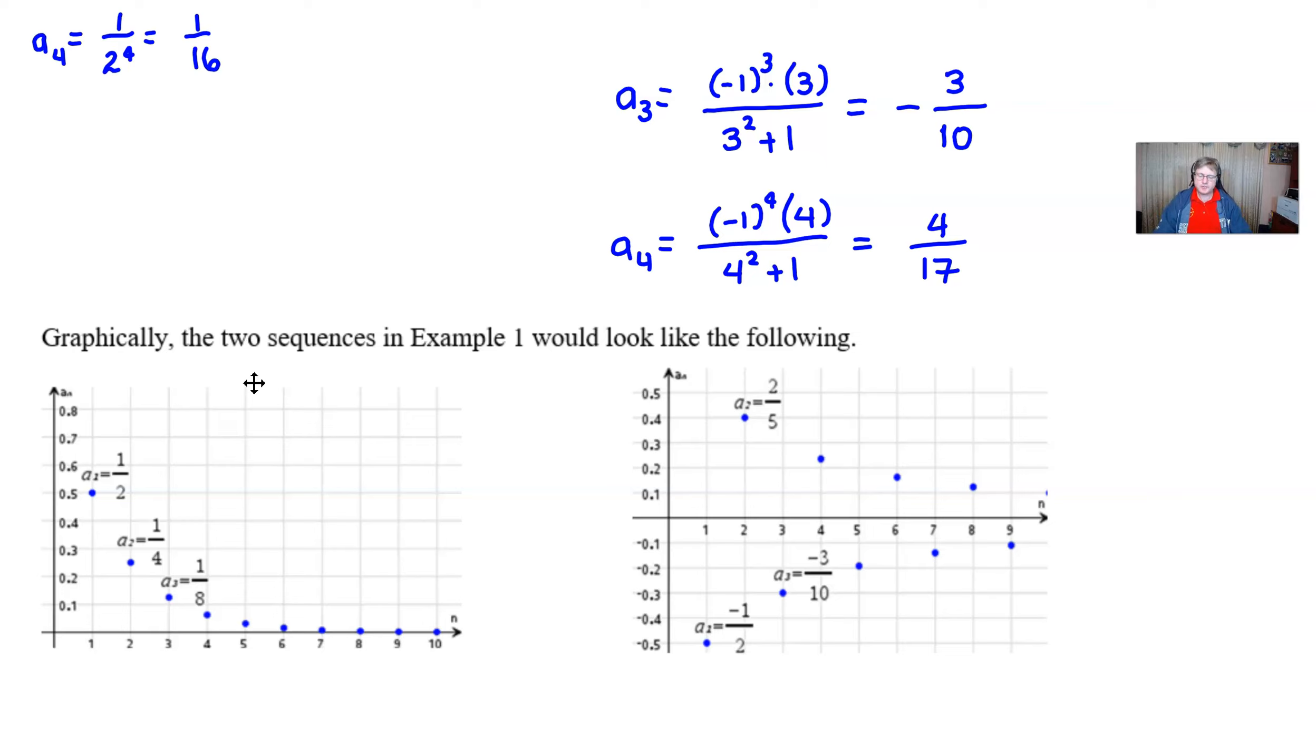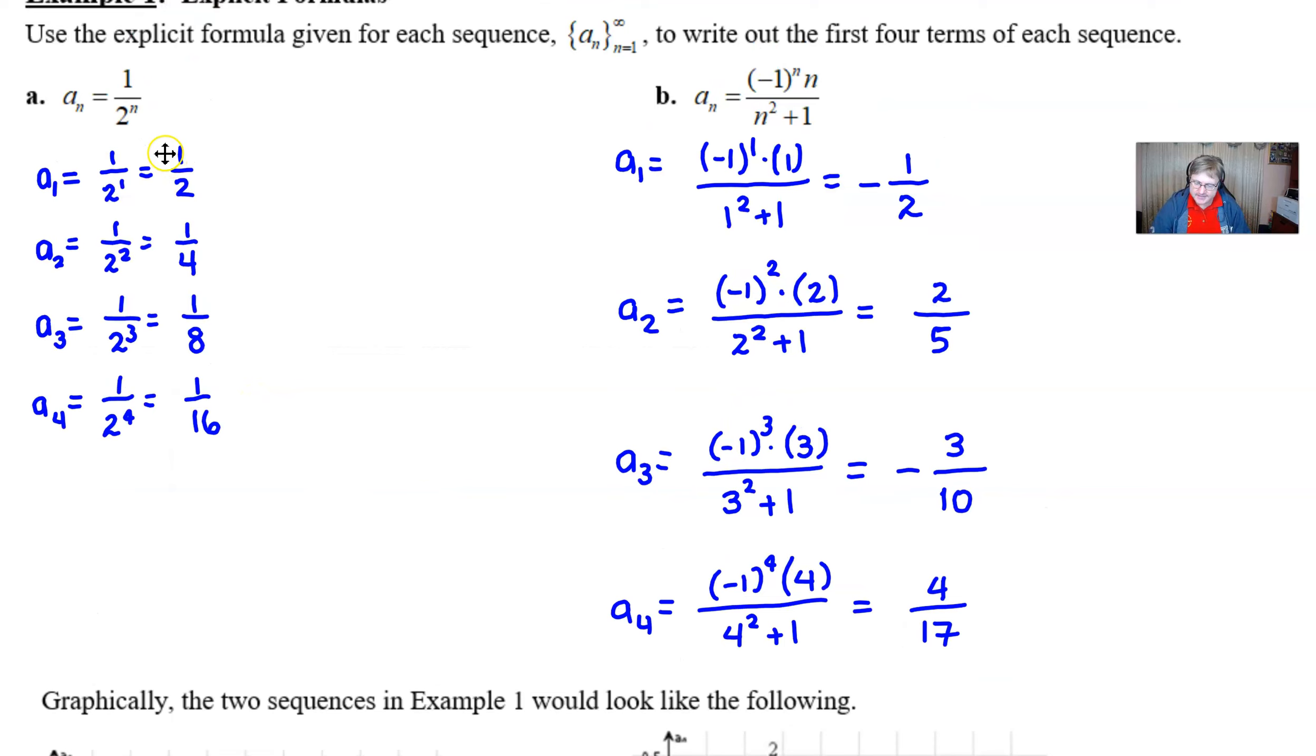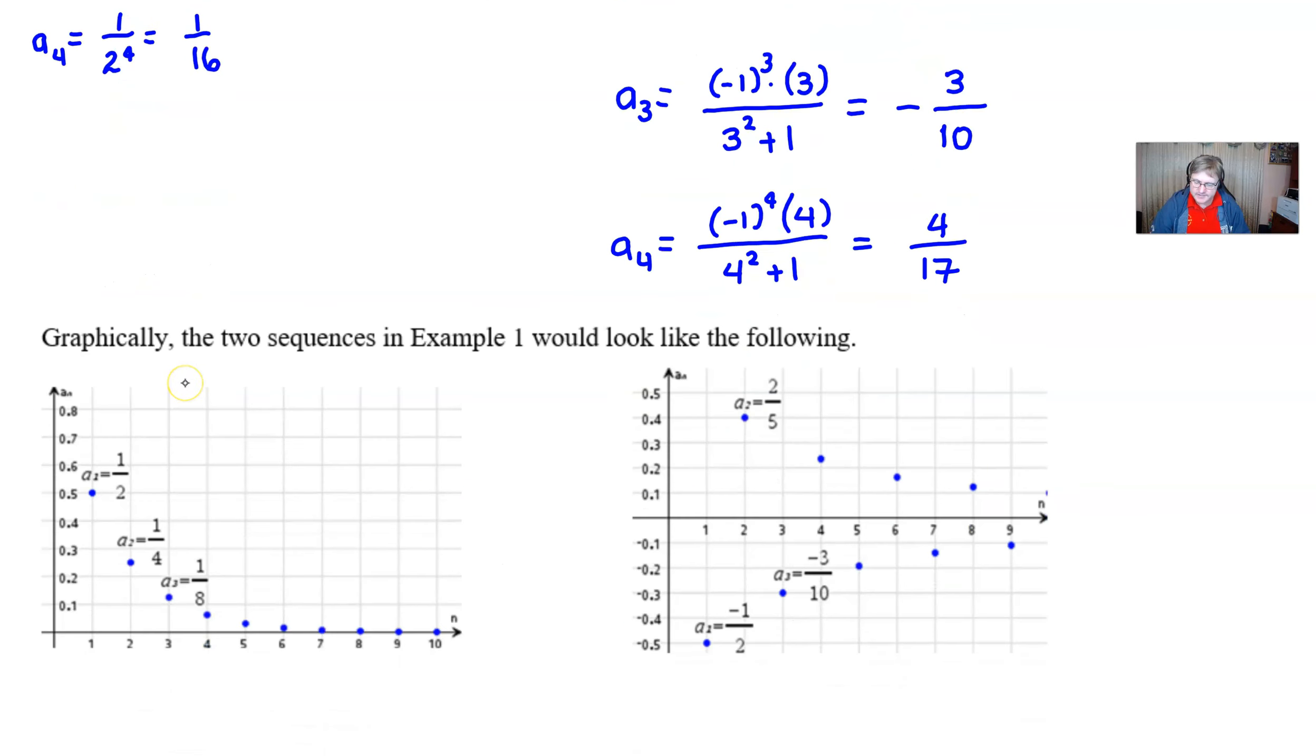So the two sequences from example 1 would actually look like this if you sketch them on your graphing calculator. And I can share with you in a separate video how to do various calculator manipulations of sequences, whether you're using a TI-84 or a TI-inspire. But if you take a look at the sequence 1 half, 1 fourth, 1 eighth, 1 sixteenth, it definitely looks like these points just seem to get closer and closer to this x-axis and continue to do so out to infinity.